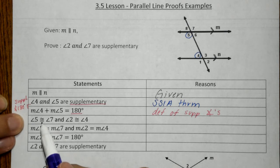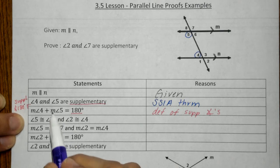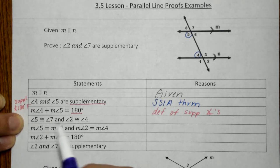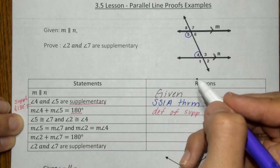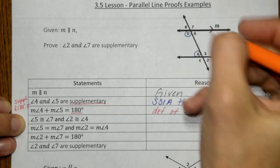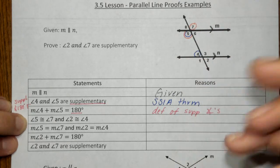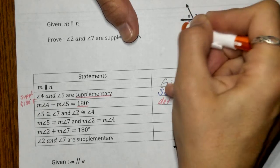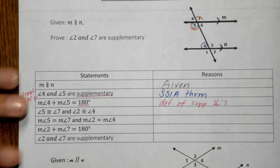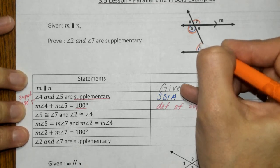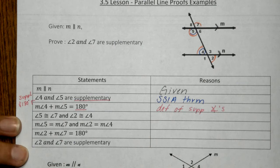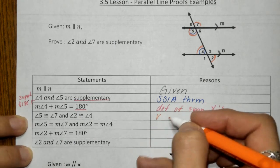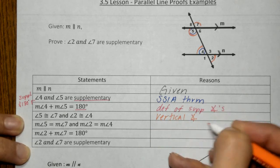Now we move down to: angle five is congruent to angle seven, and angle two is congruent to angle four. I have angle five and angle four here, but now we're bringing in angle two and angle seven. So I'm going to go up to my picture and take a look at angle five and angle seven — here they are. We're saying they are congruent. And angle two and angle four are also congruent. How do we know? Take a look at them separately — what kind of angles are angle five and seven, and what kind are angles two and four? These are your vertical angles. Therefore, we can conclude they are congruent based on our vertical angle congruence theorem.